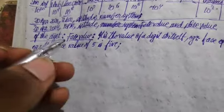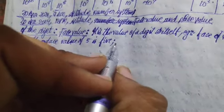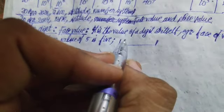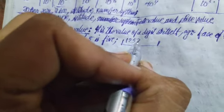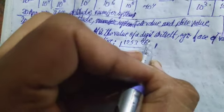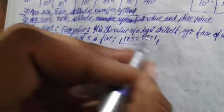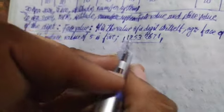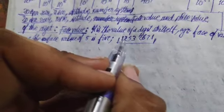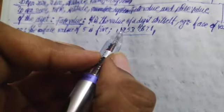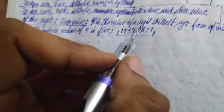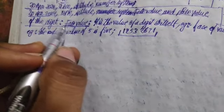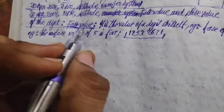This is the condition for face value, and it is quite useful when there is a large number. To represent or deliver that number to someone, you can call its face value — instead of saying 'some lakhs or thousands,' you can directly name the digits like 1, 2, 5, 3, 2, 6, 7, 1. By saying that, this is the face value.